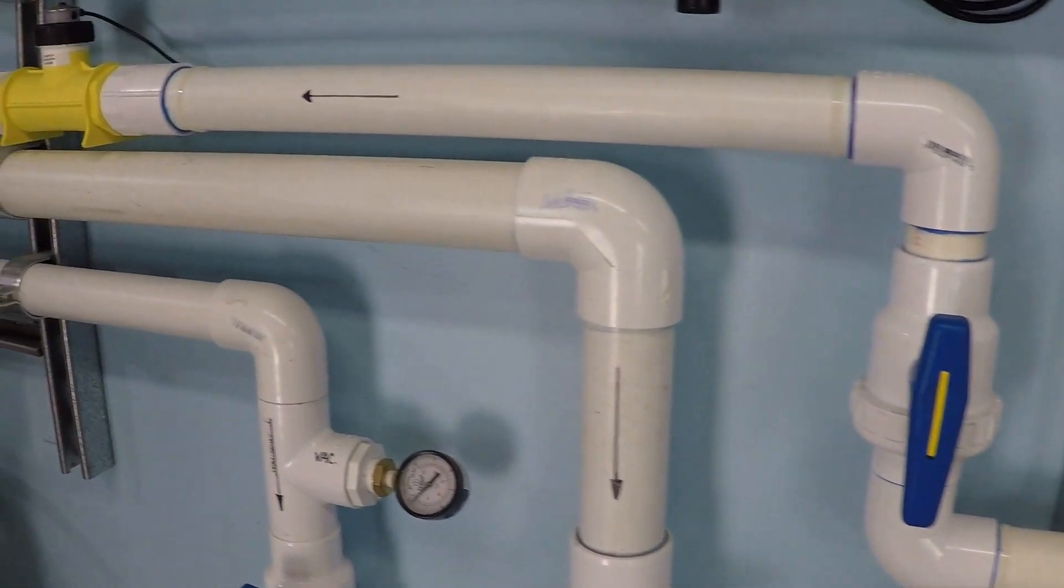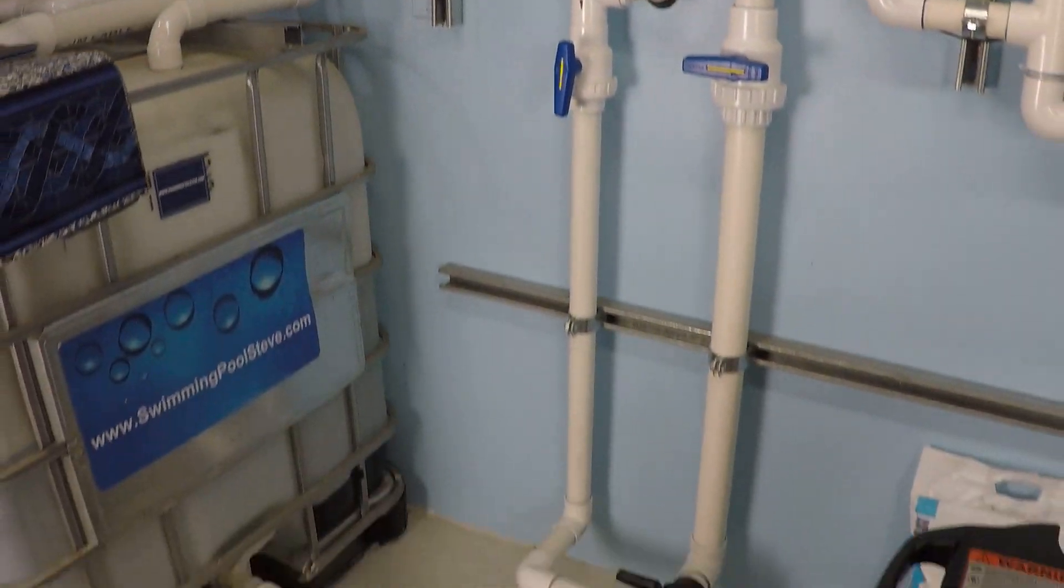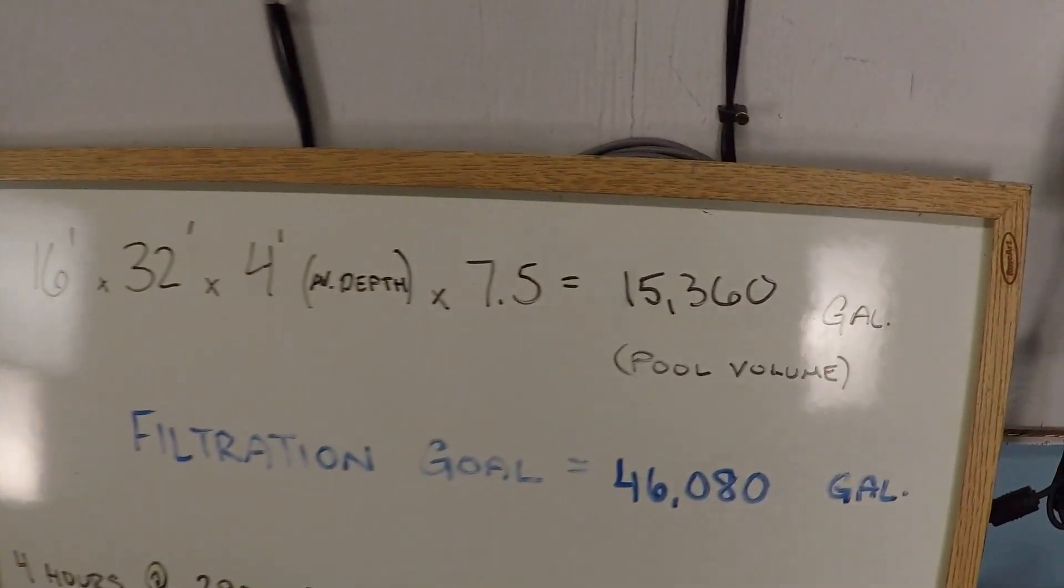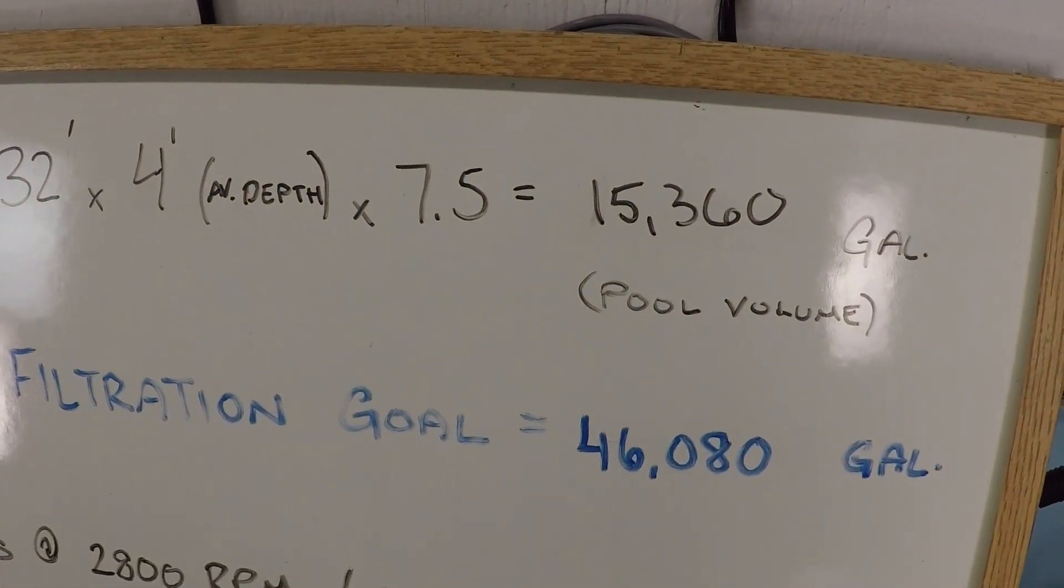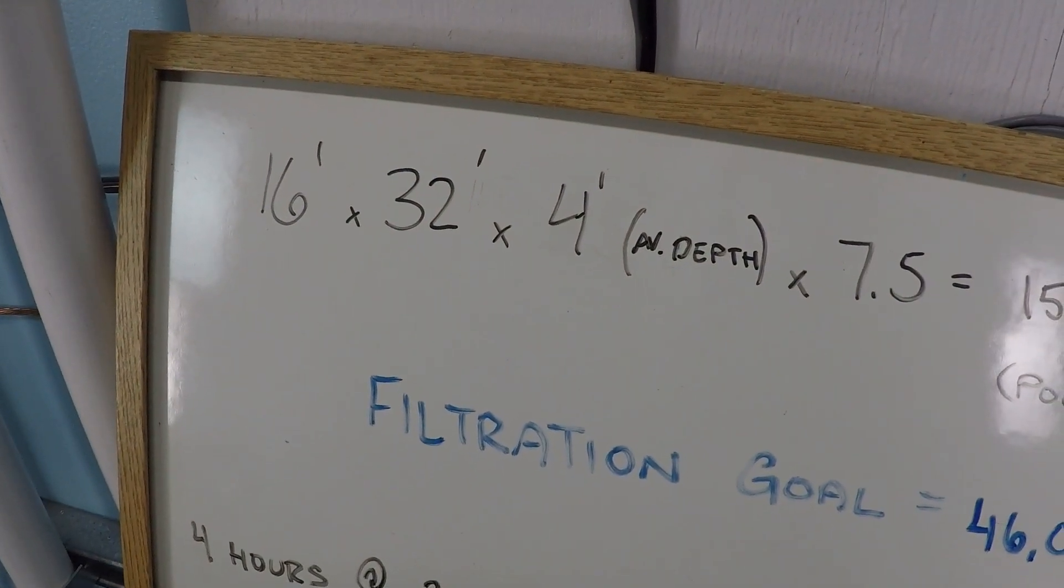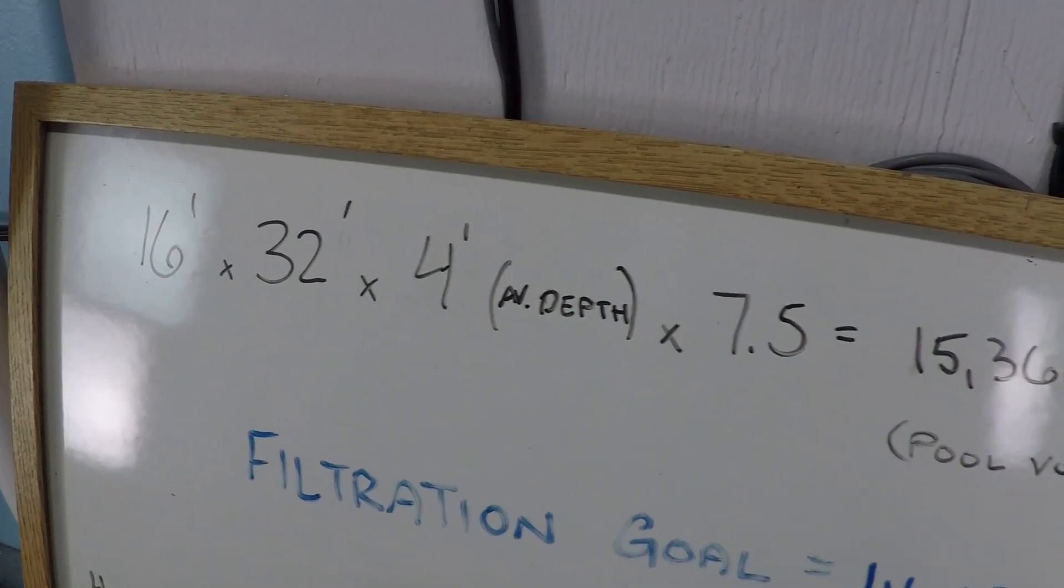And we're going to be monitoring the flow rate through that yellow digital flow meter. So the filtration schedule that we're designing today is going to be based on approximately 15,360 gallons, which is what you would have if you had a 16 by 32 foot pool that had an average depth of about four feet.